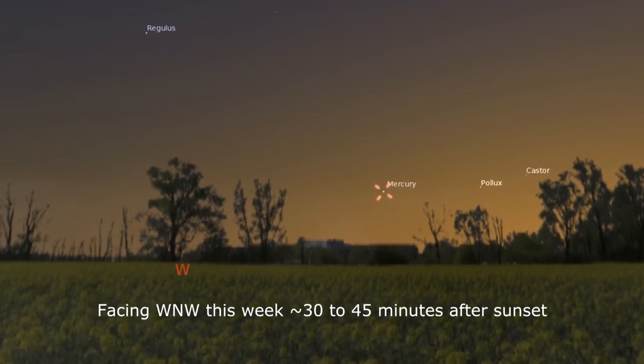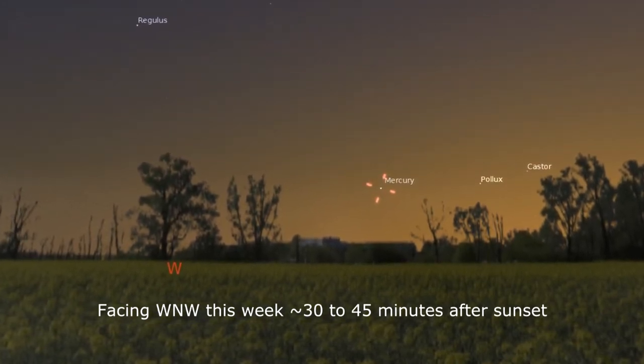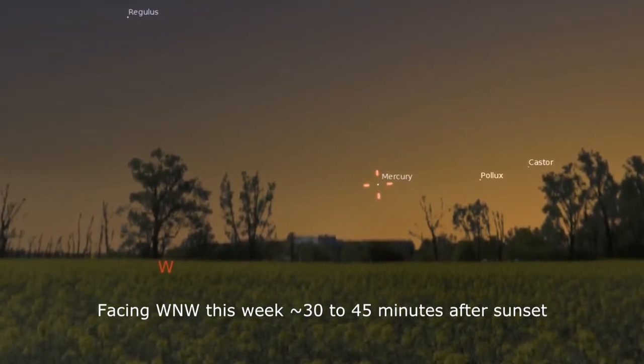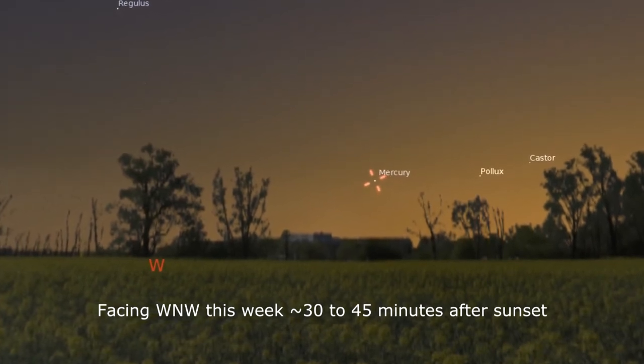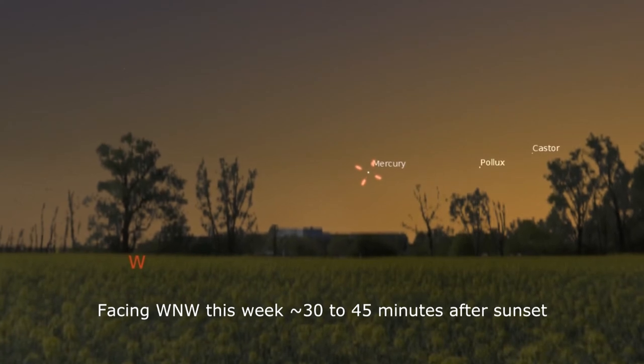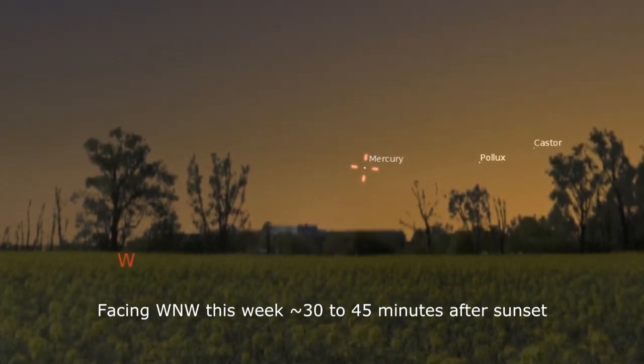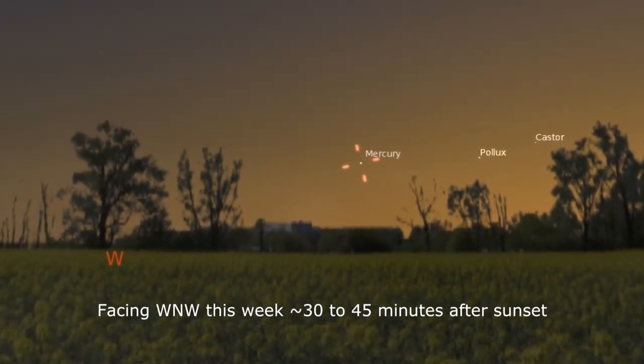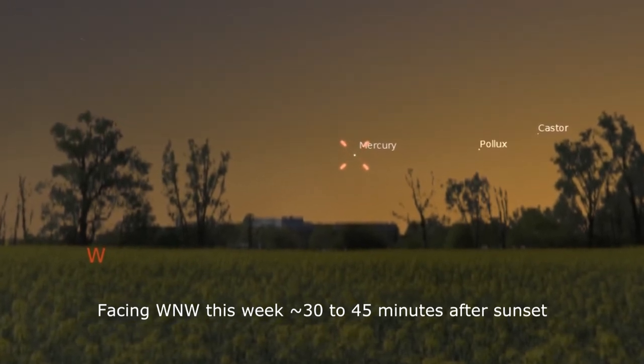The low incline of the ecliptic may cause Mercury to be hard to see in the atmospheric muck of twilight, but the stars of Castor and Pollux form a twilight trio with it that may help you find the fleet-footed planet. Just don't confuse the stars for the rocky body that's orbiting our sun.